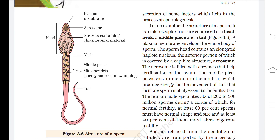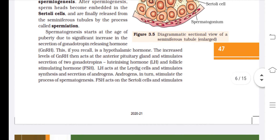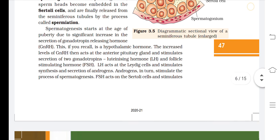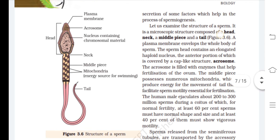The diagrammatic sectional view of an enlarged seminiferous tubule shows Sertoli cells, primary spermatocyte, secondary spermatocyte, spermatid, and spermatozoa. The diagram of the sperm labels the head, neck, and tail. In the head region, the acrosome and nucleus are present; the middle piece contains mitochondria as the energy source for swimming; and the whole structure is covered by a plasma membrane.